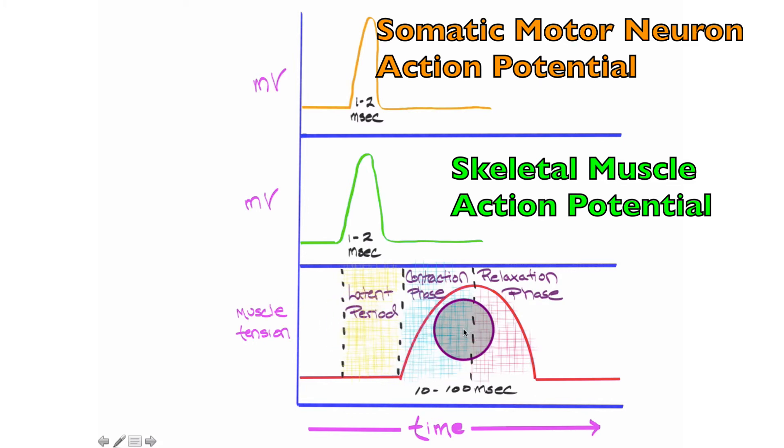The last one is what's known as a muscle twitch. A twitch is a muscle contraction-relaxation cycle. This parabola right here represents the twitch. The first half of it is a contraction phase, the second half is the relaxation phase.